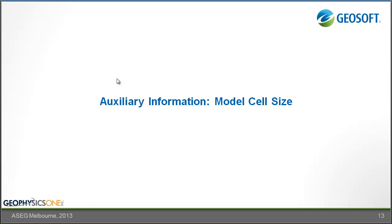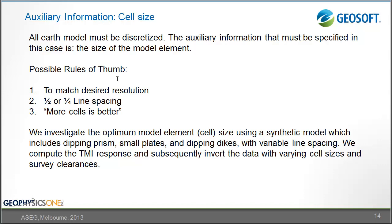Now let's look at the auxiliary information associated with model cell size. All Earth models must be discretized numerically, and the question is: how big should cells be? Should more cells give more resolution? Should they follow a gridding condition of four cells per line spacing? We'll investigate using a synthetic model with dipping prisms, small plates, dikes, variable line spacing, and survey height, computing the TMI response and inverting with varying cell sizes of 10, 20, 40, 80, and 120 metres.